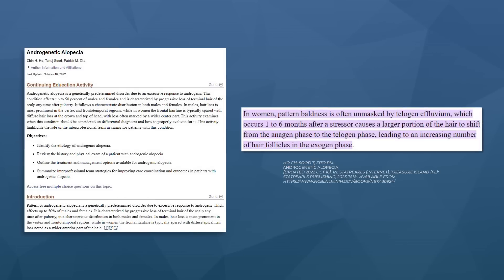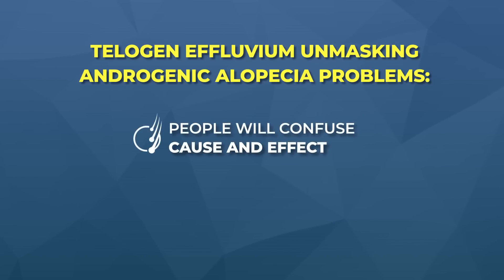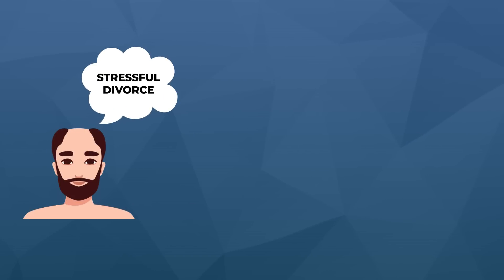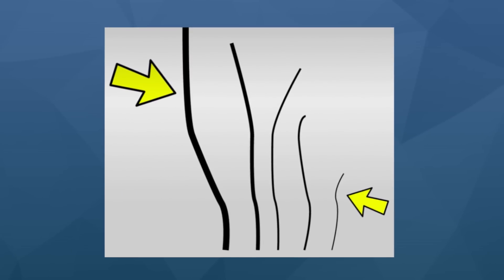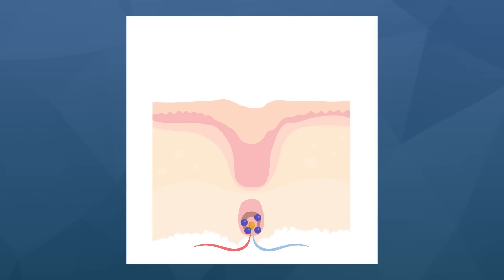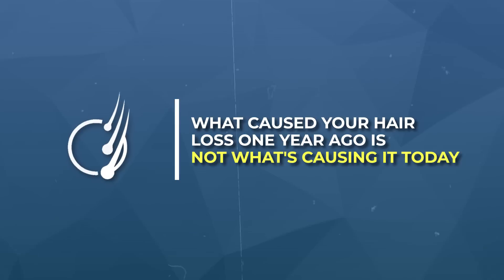This situation happens frequently and causes two big problems. The first is that people confuse or conflate hair loss cause and effect. They'll correctly identify a stressor — a stressful divorce, a nutrient deficiency, hypothyroidism — correct it, and see hair start to grow back. But it comes back less dense and thinner, because the returning hairs were miniaturized by the underlying androgenic alopecia. What caused your hair loss one year ago is now not what's causing it today. If you don't know this, you continue treating hair loss as just telogen effluvium when that's no longer what's causing it, so your hair loss continues to worsen until you shift your treatment targets.